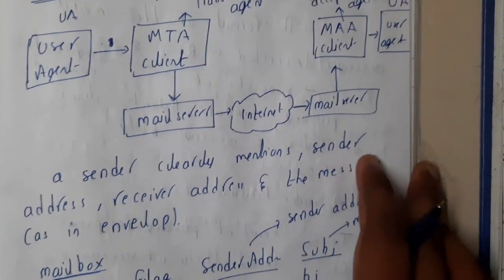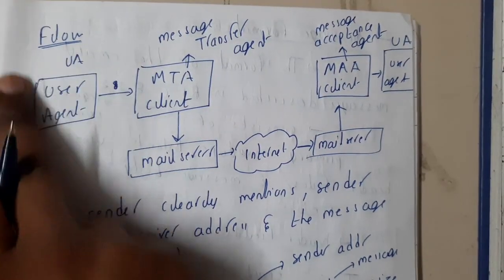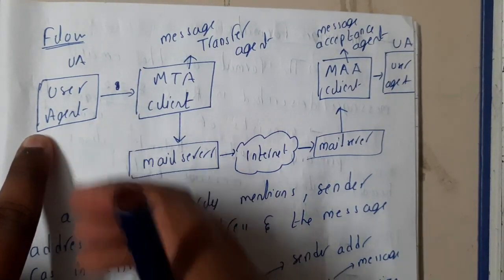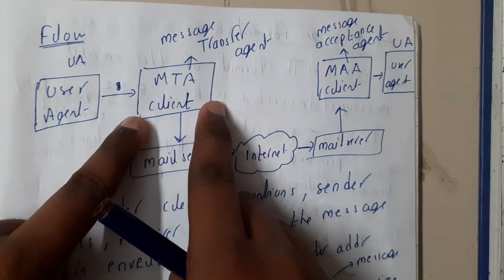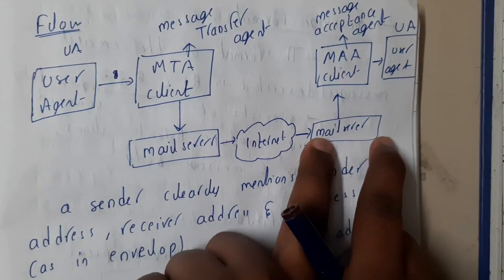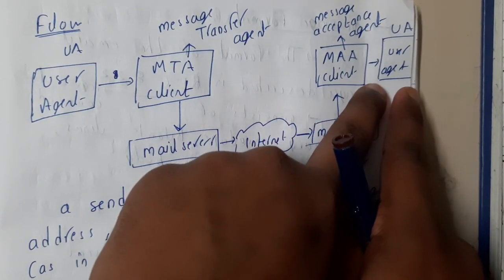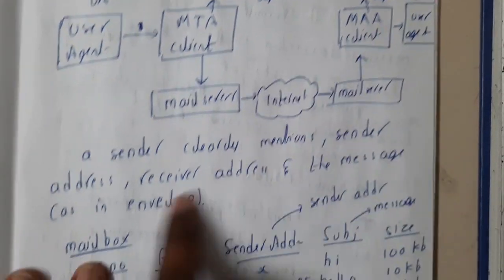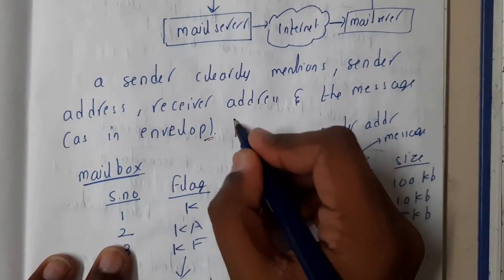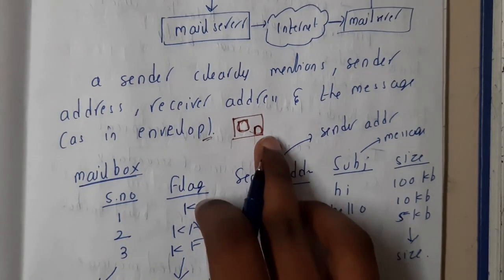For a simple diagram of the email flow: you are a user, and your friend is also a user to whom you are sending. You write your mail and pass it to the MTA client, which transfers it to the mail server. That mail is sent via the internet to your friend's mail server on the other side, and the user receives it from there. The sender clearly mentions the sender address, receiver's address, and the message — similar to how you write on an envelope.